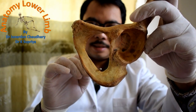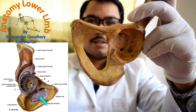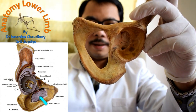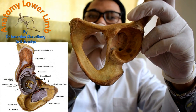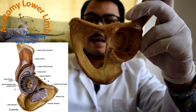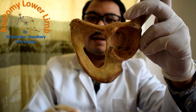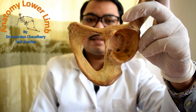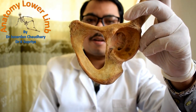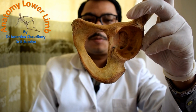In the living body, the obturator foramen is covered by the obturator membrane. On its superior aspect there is a gap through which the obturator blood vessels and obturator nerve pass. This gap is called the obturator groove.